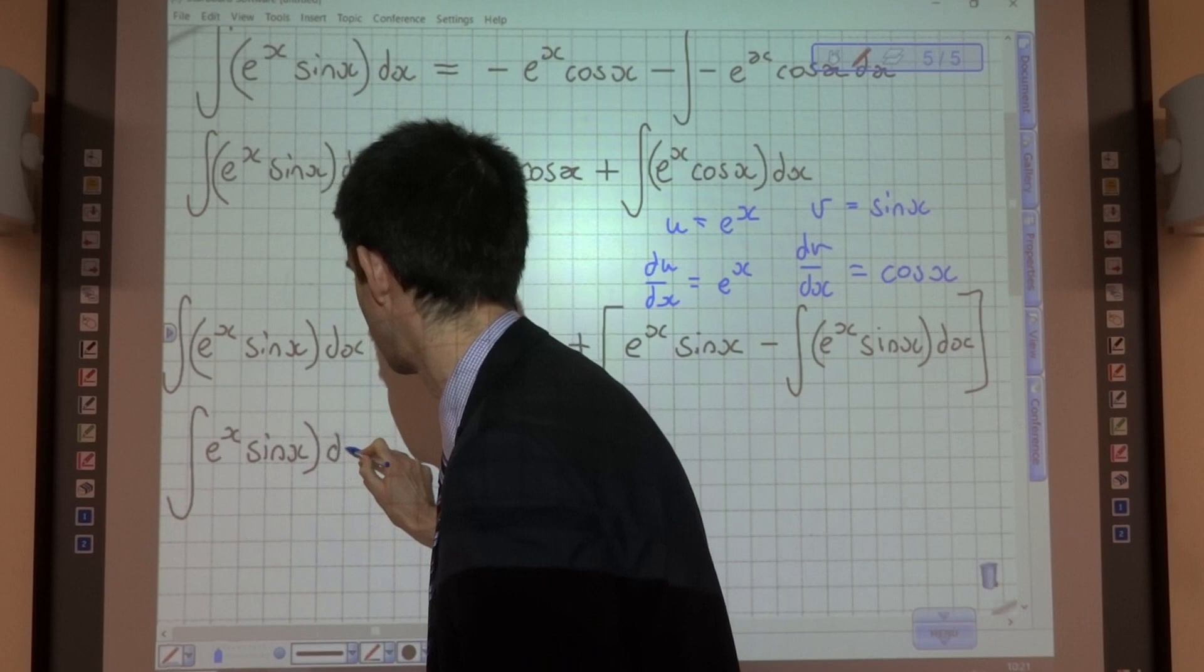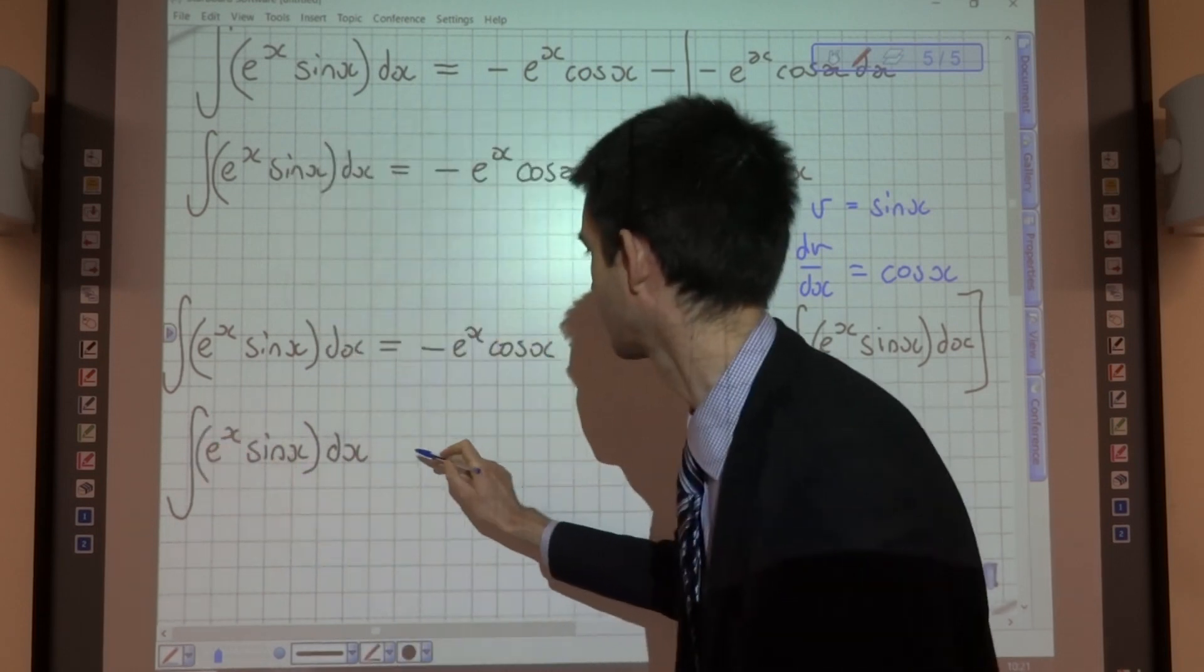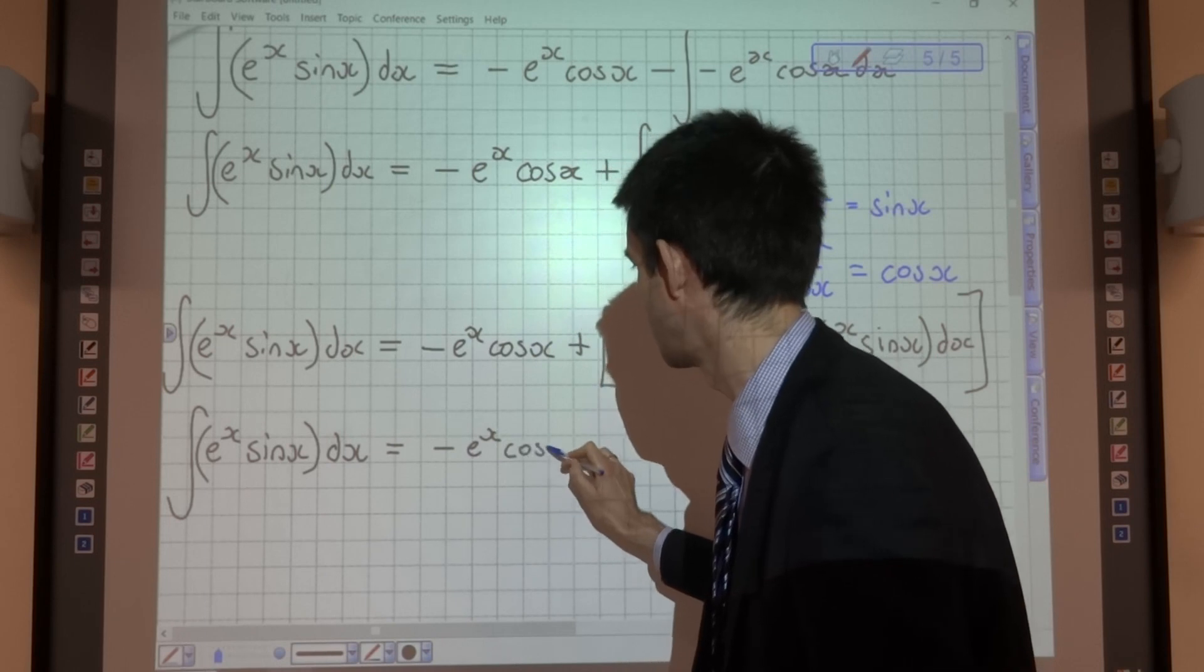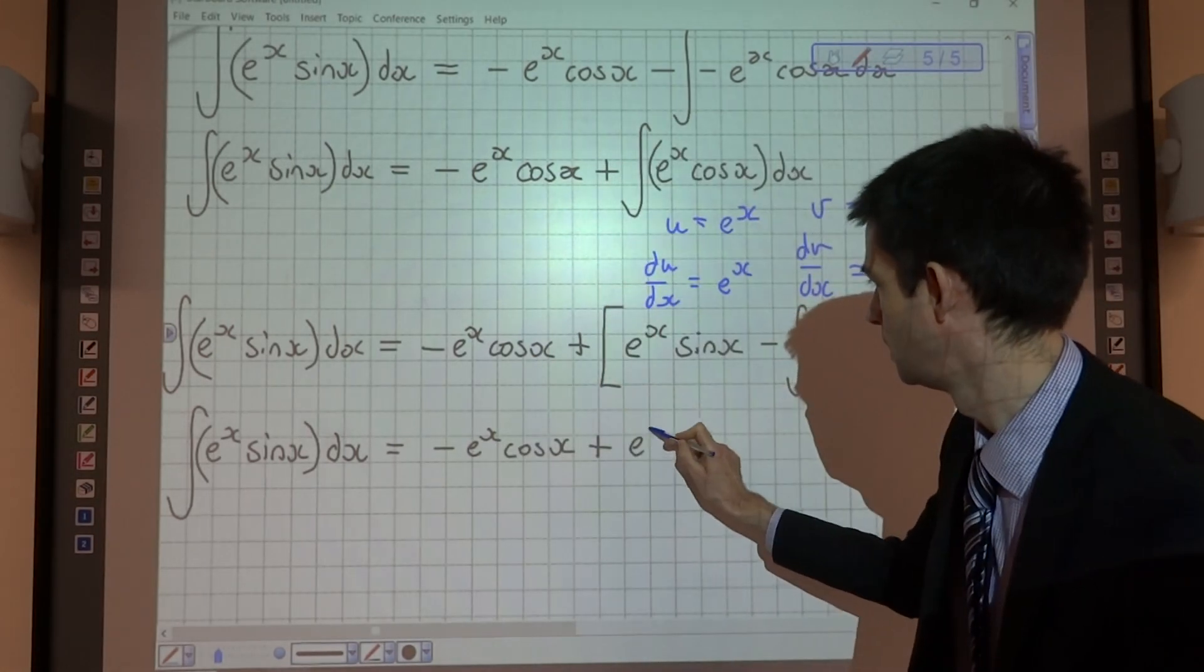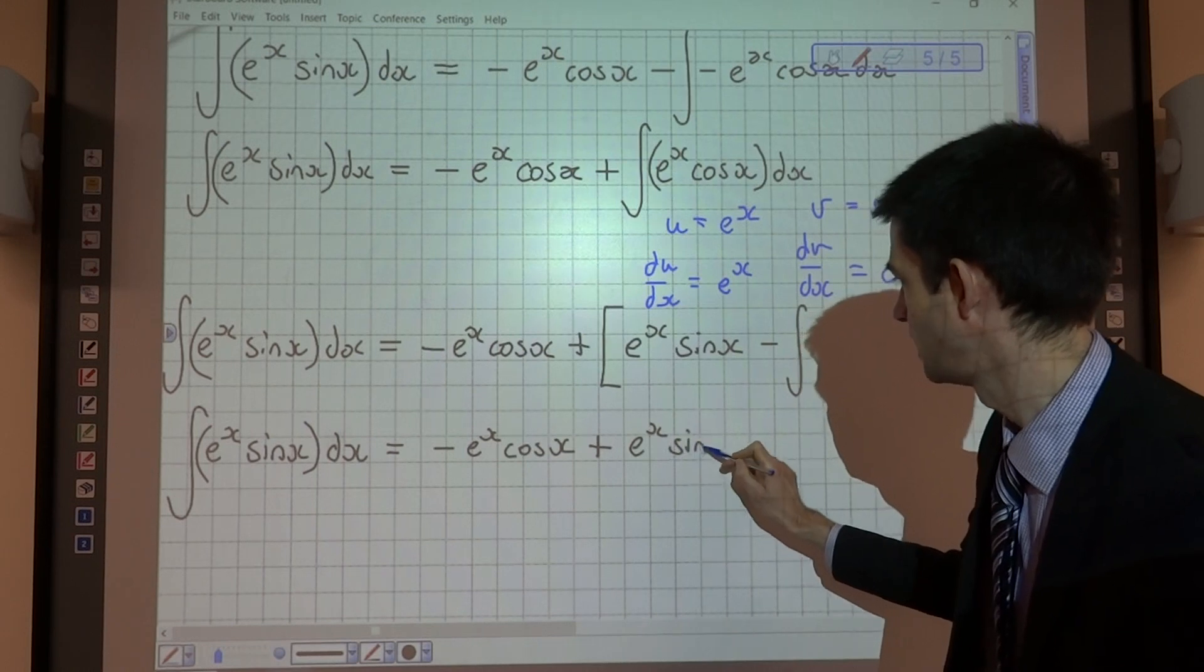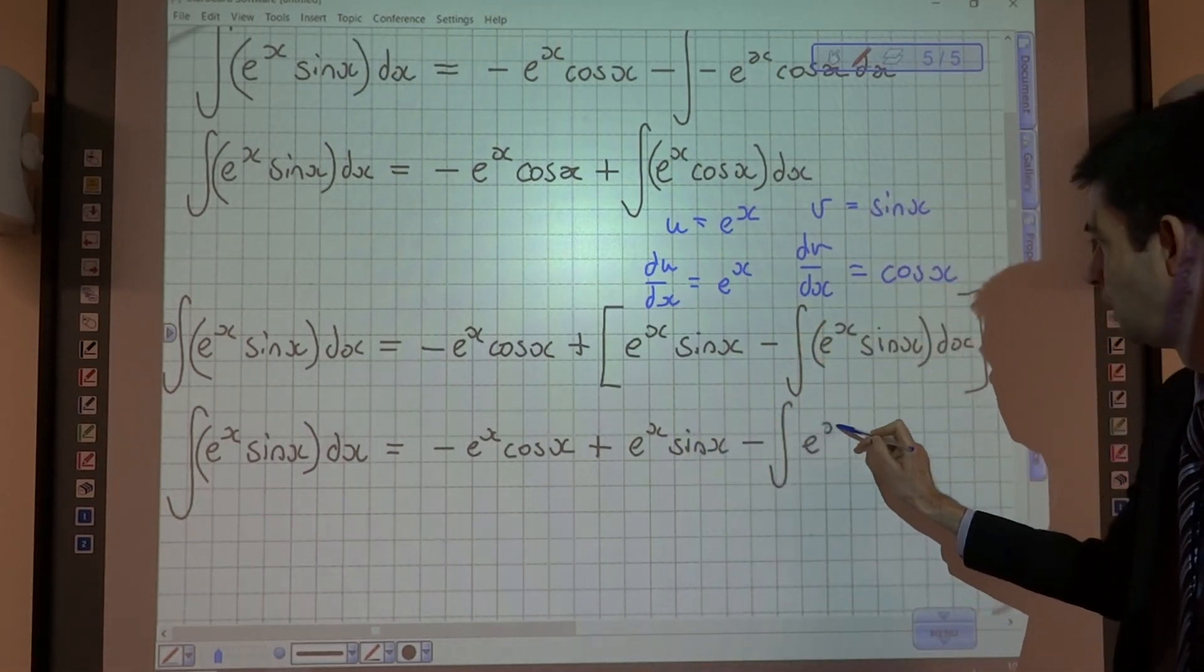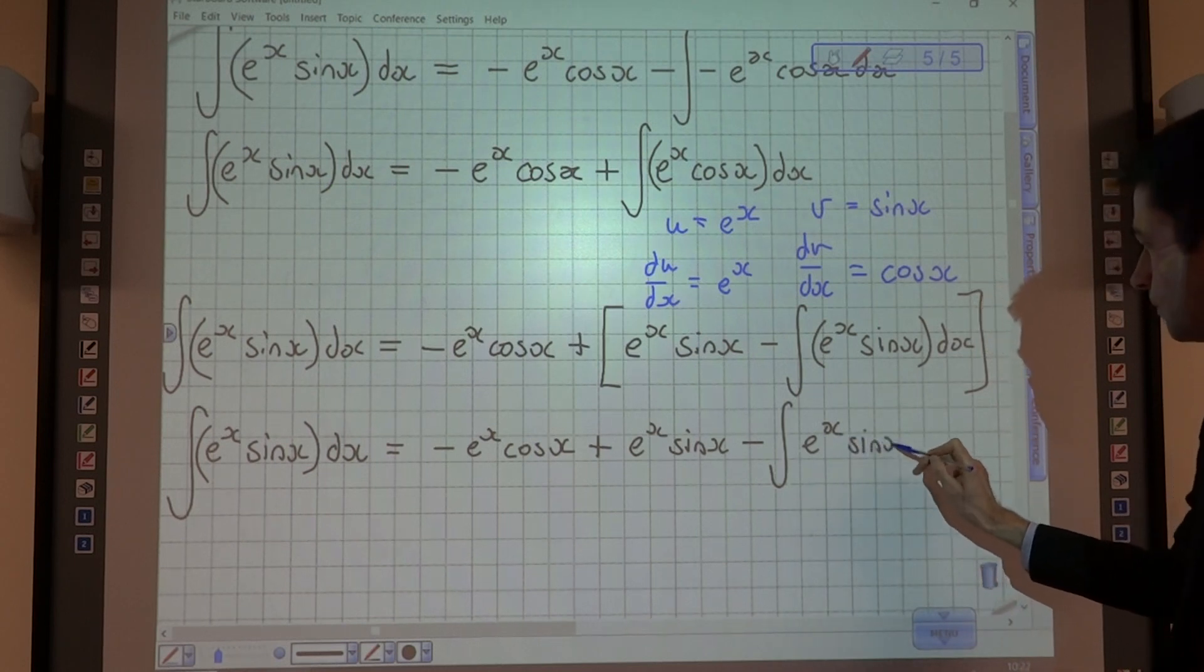So e to the x sin x equals negative e to the x cos x plus e to the x sin x minus the integral of e to the x sin x.